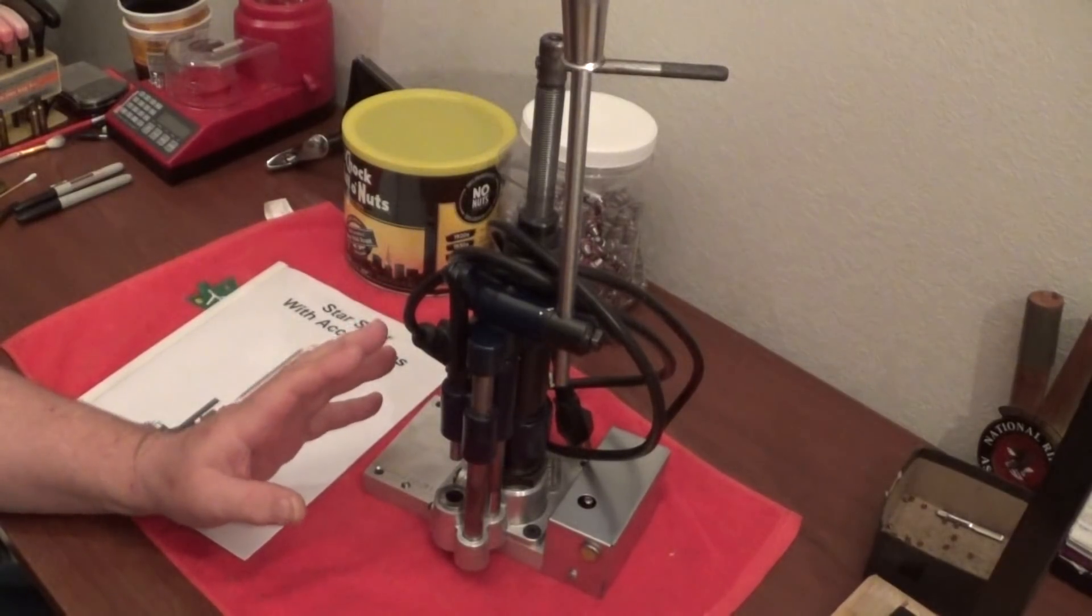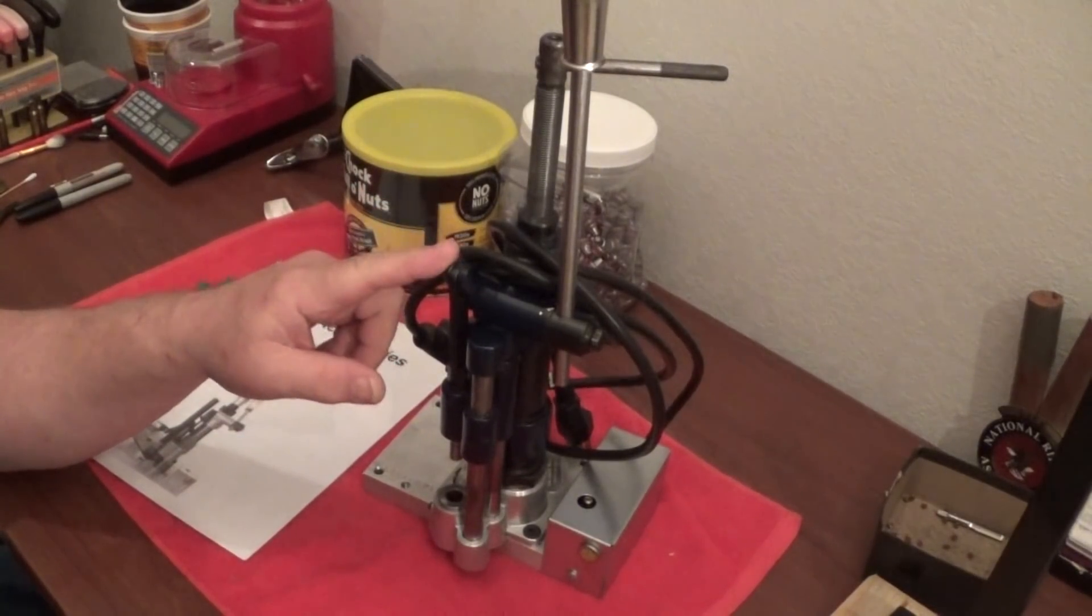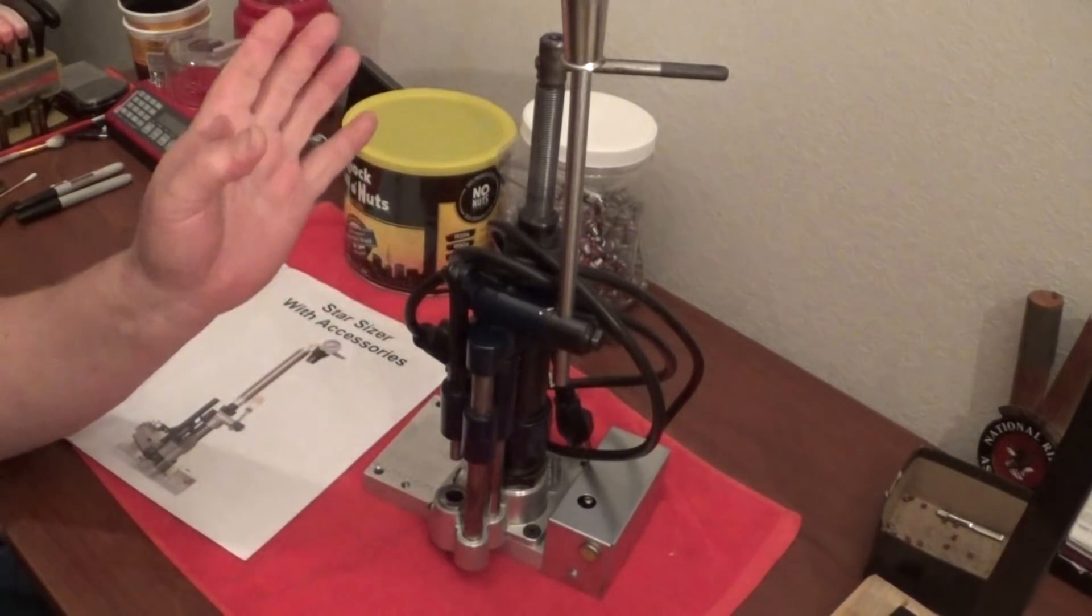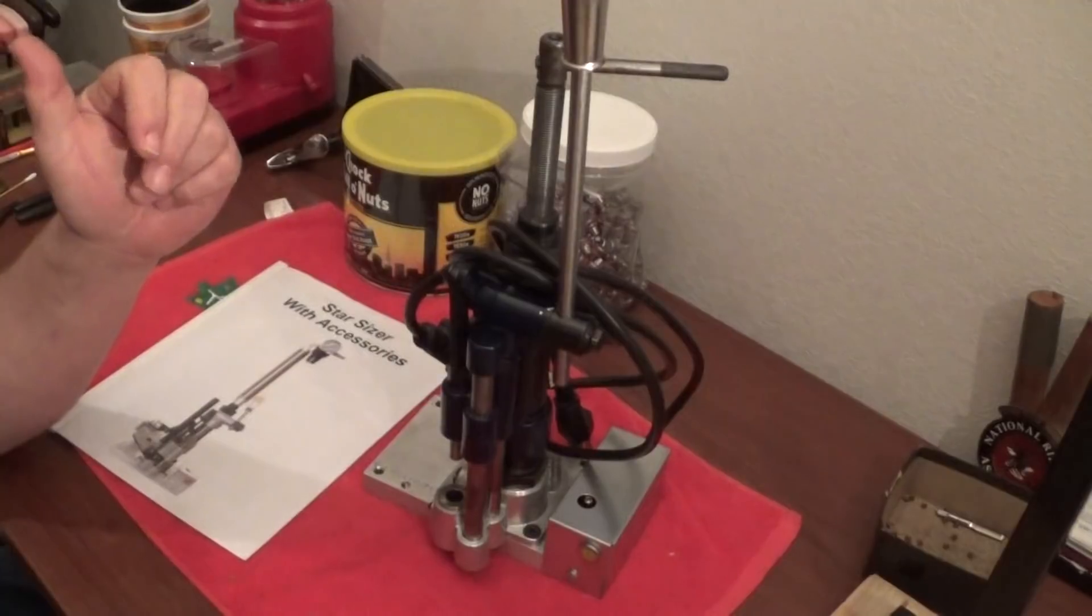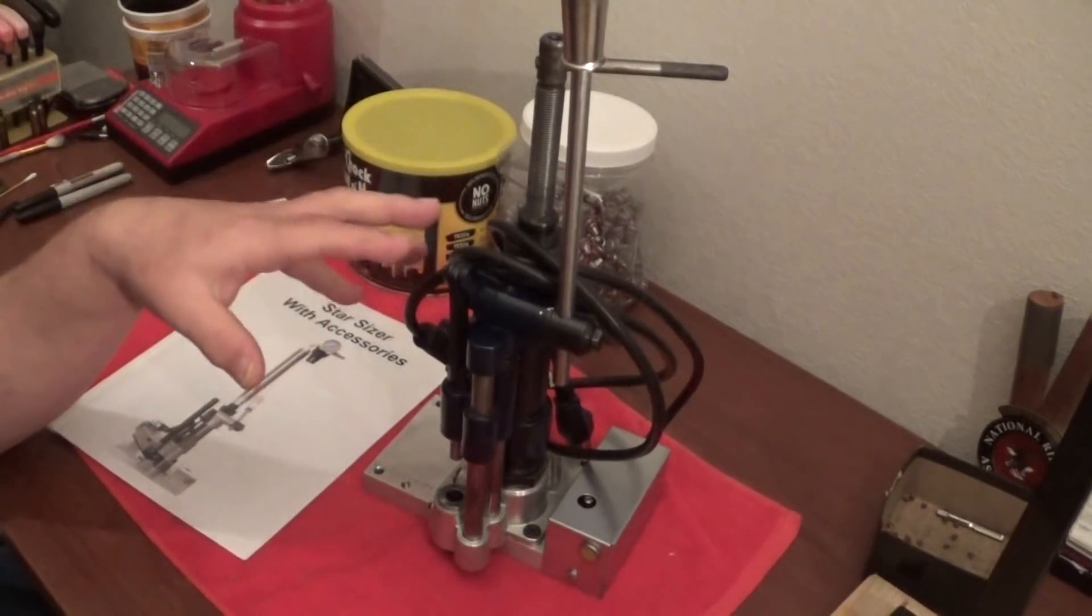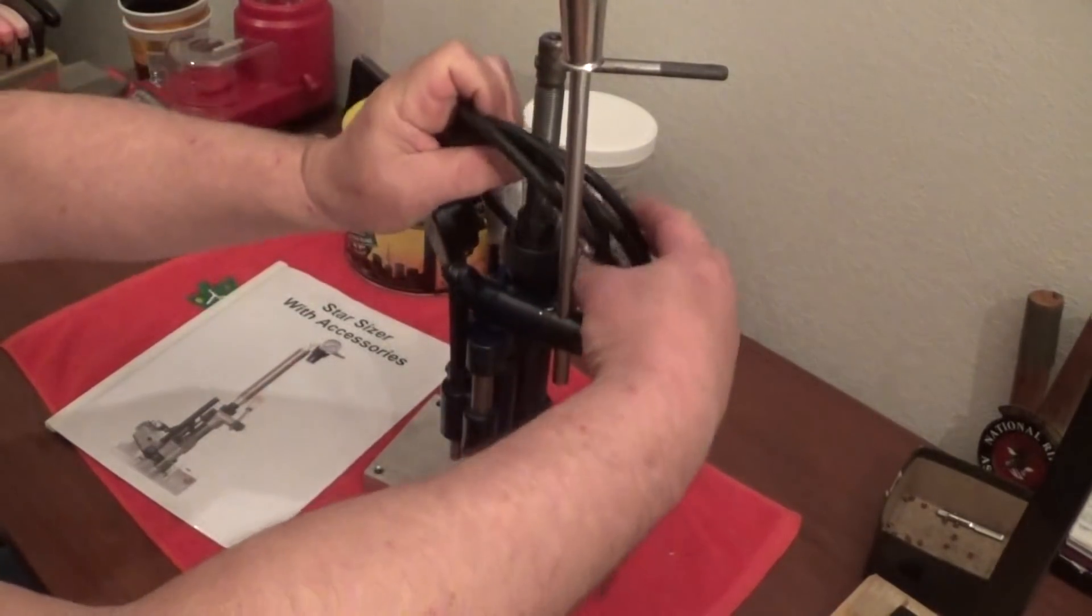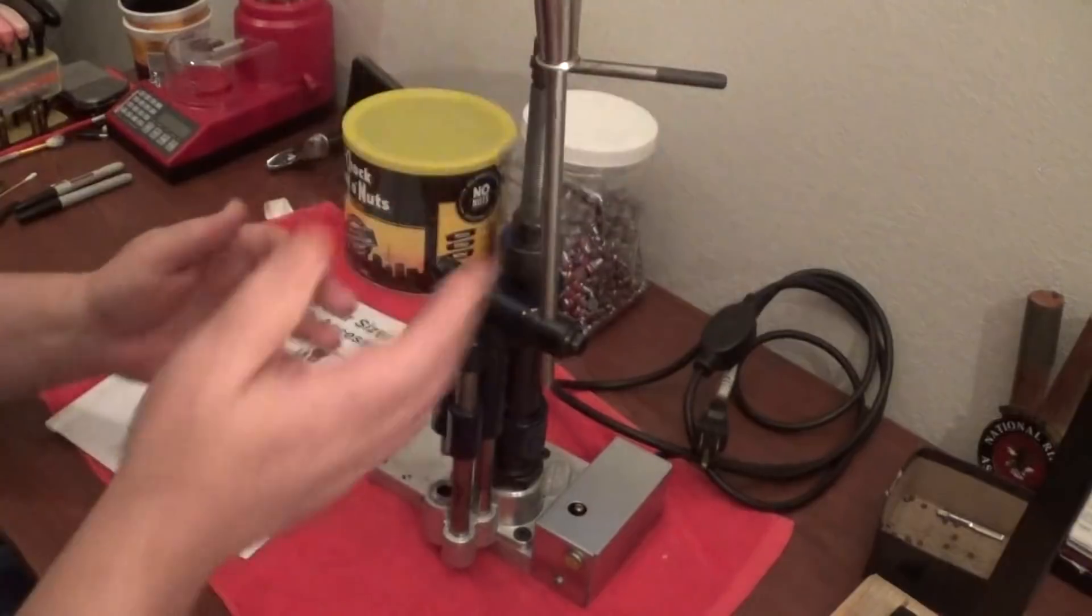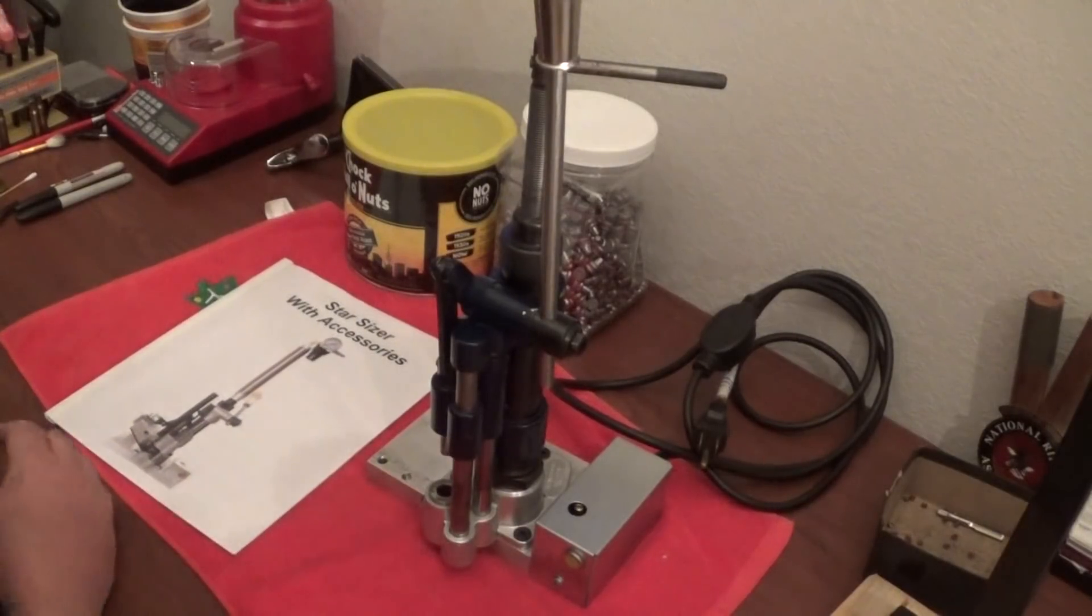I'm gonna use this one for smaller calibers like 9 millimeter, 38 special, 357, 30 cal, 32, that sort of thing. And I'm gonna dedicate my other machine, my Magma machine that's already set up with a collator on it, I'm gonna dedicate that to 45 ACP. There is a few accessories though that you need for this machine in order to make it almost foolproof.